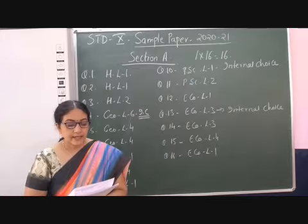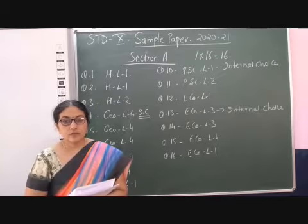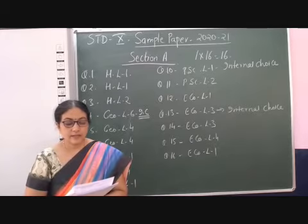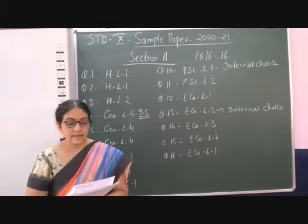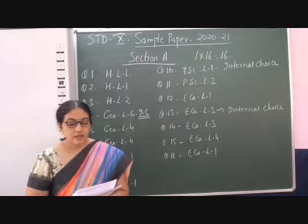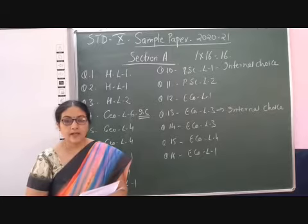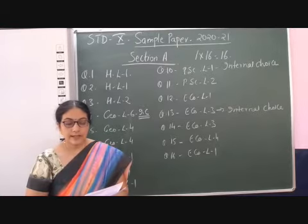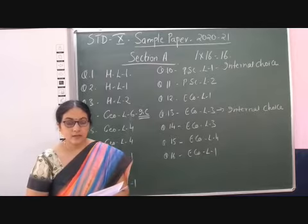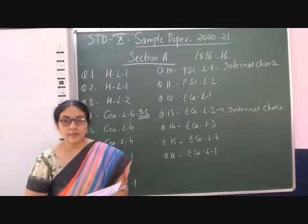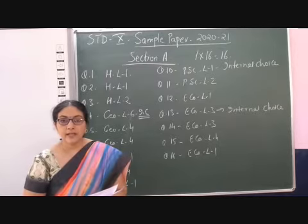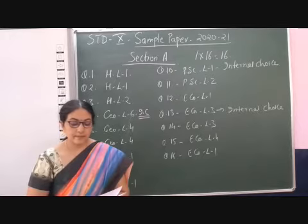Question 8 is again taken from geography, lesson number 4, that is Agriculture. The question is: a type of millet rich in iron, calcium and other micronutrients is? The correct answer is ragi. This is also given in your textbook on page number 38 of the geography chapter.